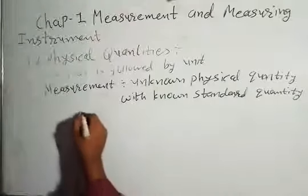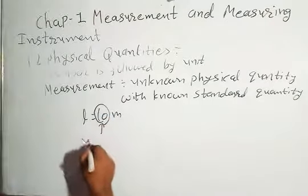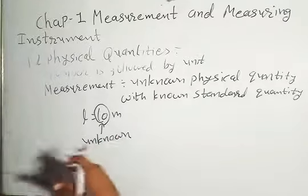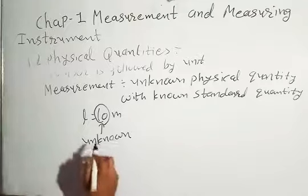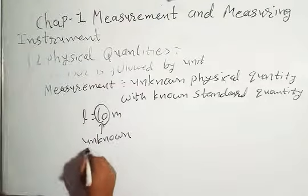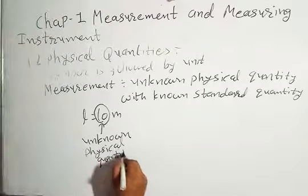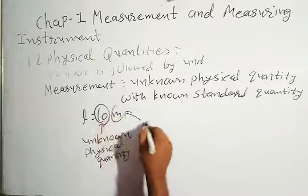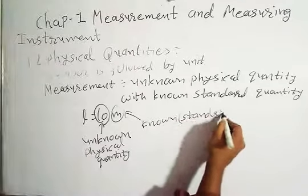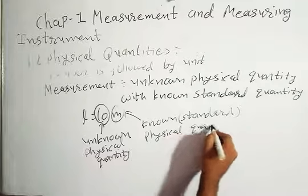For example, if a length L is equal to 10 meter, this was first unknown. We measured the unknown, and then we found that it is known. But before measuring it was unknown — that is the unknown physical quantity. And meter is the known or standard quantity.